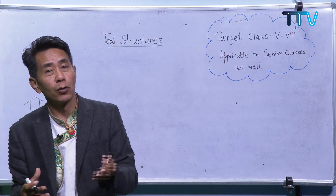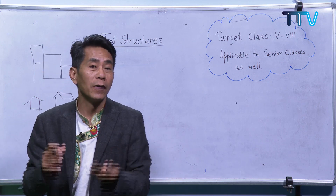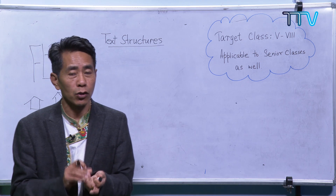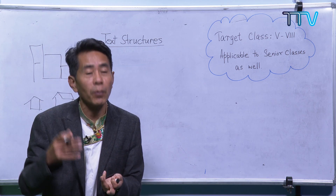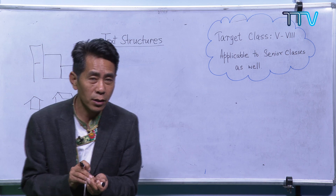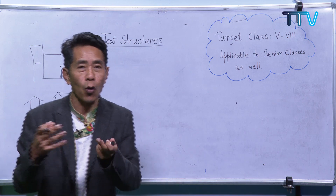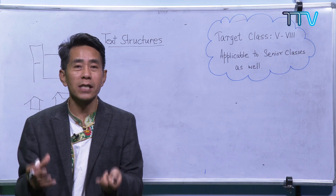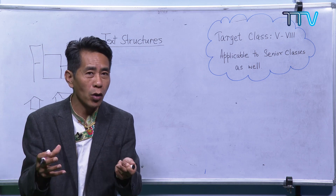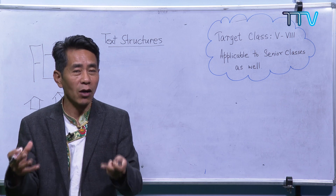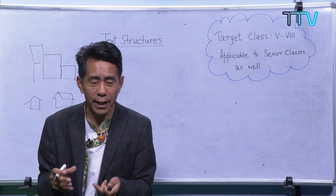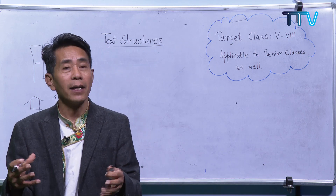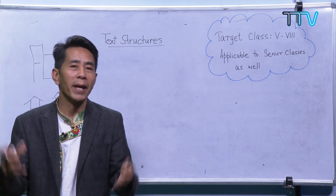We have already done this. The first one is chronological order, or sequence, or time order, which talks about events in a proper order. The second one is compare and contrast — the writers explain the similarities and differences. The third one is cause and effect, where the writer talks about a cause and some effects or results. And finally we have problem and solution, where the writer comes up with one problem and proposes one or many more solutions.